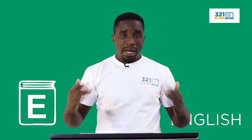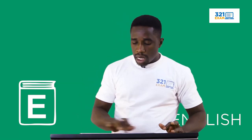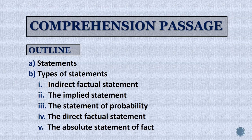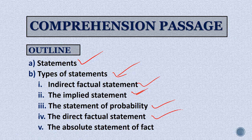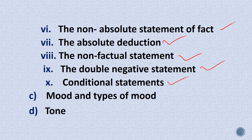It is pertinent that we understand what the comprehension passage is all about. Looking at the outline, we're covering: statements and the types of statements — the indirect factual statement, implied statement, statement of probability, direct factual statement, absolute statement of fact, non-absolute statement of fact, absolute deduction, non-factual statement, double negative statement, and the conditional statement.